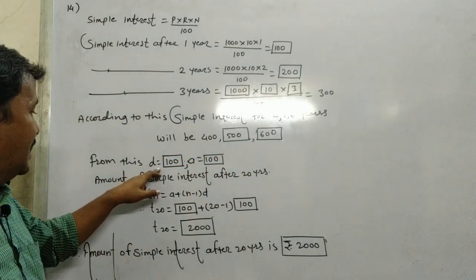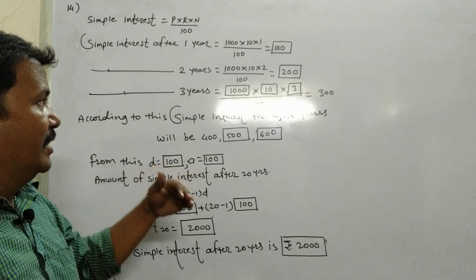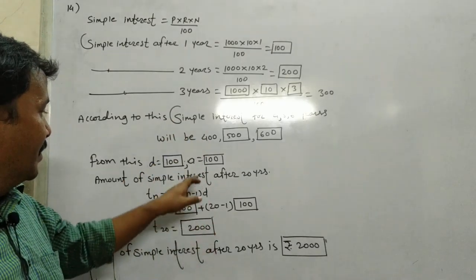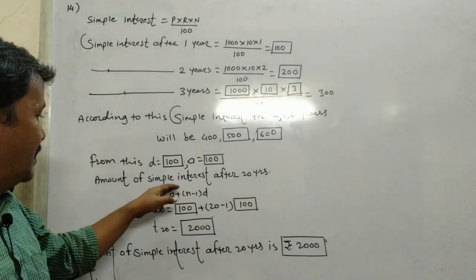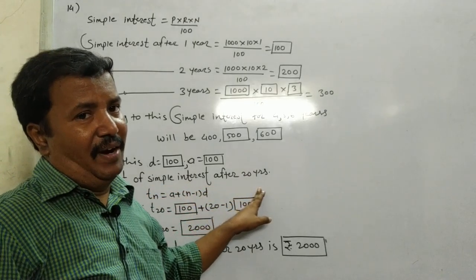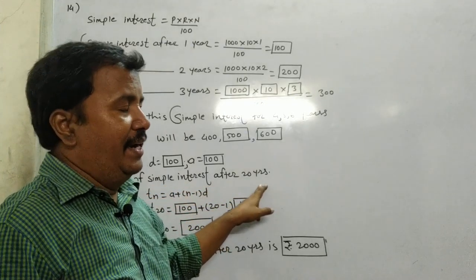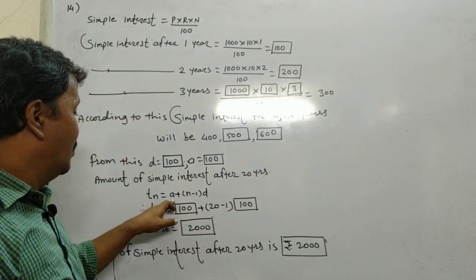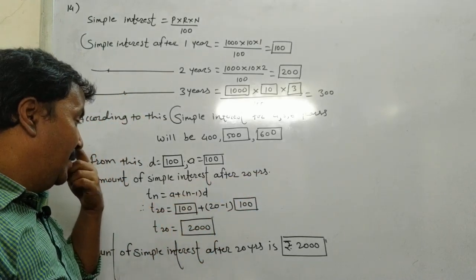From this, d equals 100. The common difference is 100. a is 100. Amount of simple interest after 20 years, we need to find. So TN is equal to a plus (n minus 1) into d.